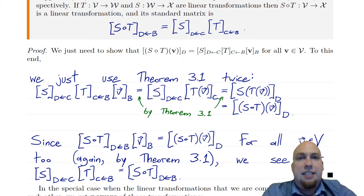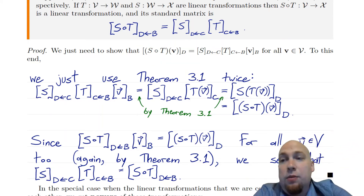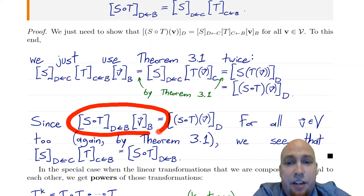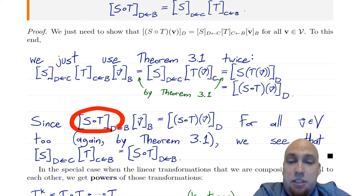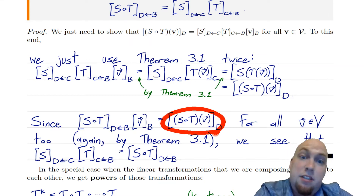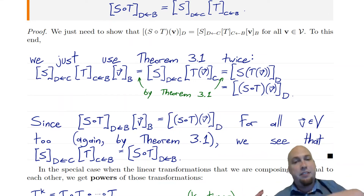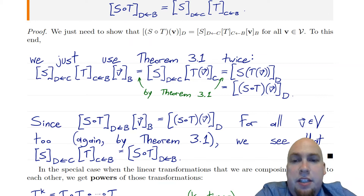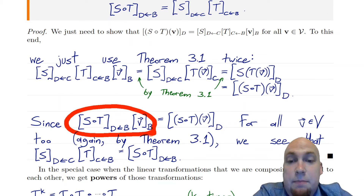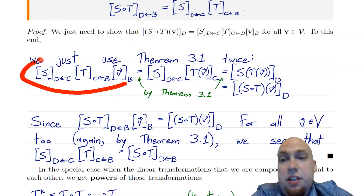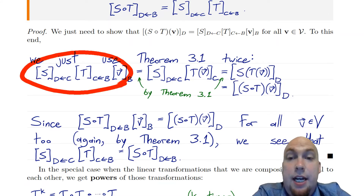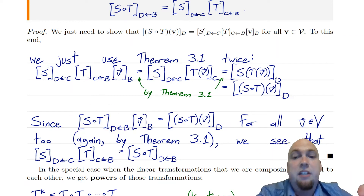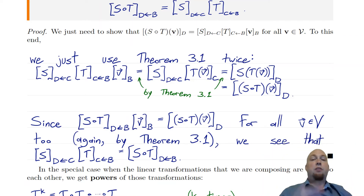That's exactly what we wanted it to equal. Because we know that the standard matrix of s composed with t times the coordinate vector of v equals the coordinate vector of s composed with t of v — by Theorem 3.1 — tracing these equalities through, the standard matrix of s composed with t times v_b equals the standard matrix of s times the standard matrix of t times v_b. Because this is true for all v's, these two matrices must be equal, and the theorem is done.